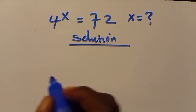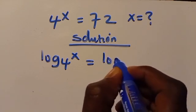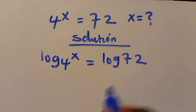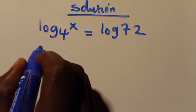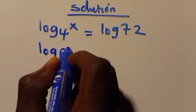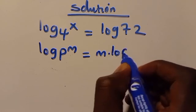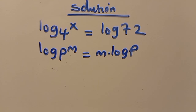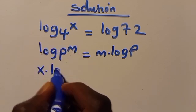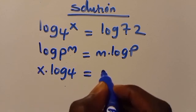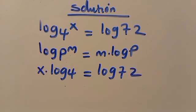From here, let's introduce log to both sides of this expression, so we have log of 4 to the power of x equals log 72. We recall the rule: log p to the power of n equals n times log p. So we get x times log 4 equals log 72.